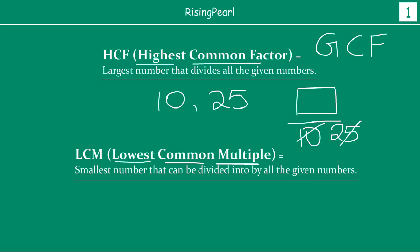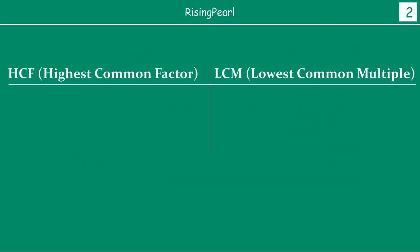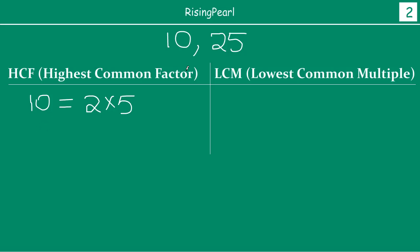Let's find out this special relationship by taking an example. Let's take the same two numbers: 10 and 25. The first step is to find both HCF and LCM. To find HCF, we write the prime factors of each number. So 10 can be written as 2 times 5, and 25 will be equal to 5 times 5.